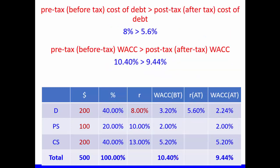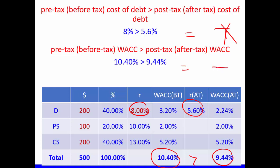Before-tax cost of debt is always bigger than after-tax cost of debt, because we multiply by (1 minus the tax rate). They would only be equal if the tax rate were 0%. Similarly, before-tax WACC is always greater than after-tax WACC, because after-tax WACC is based on after-tax cost of debt while before-tax WACC uses the pre-tax cost of debt.